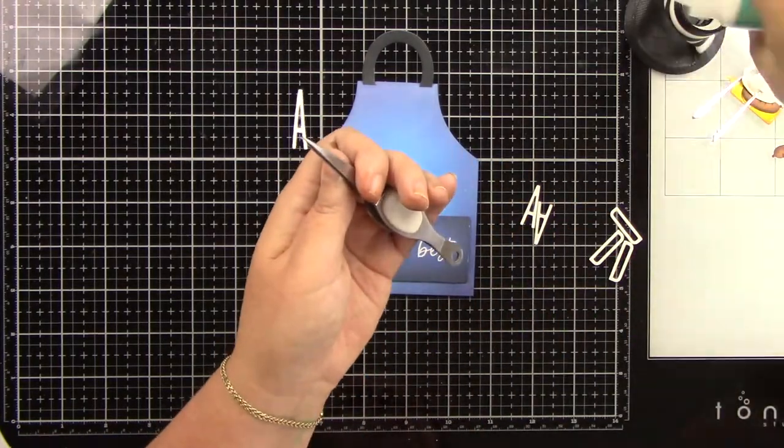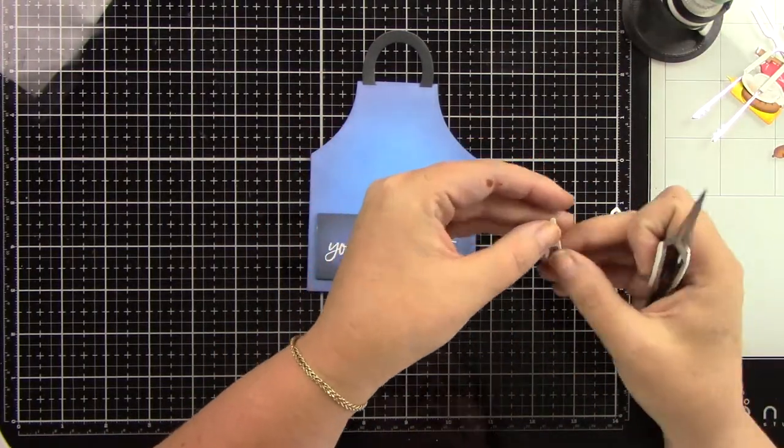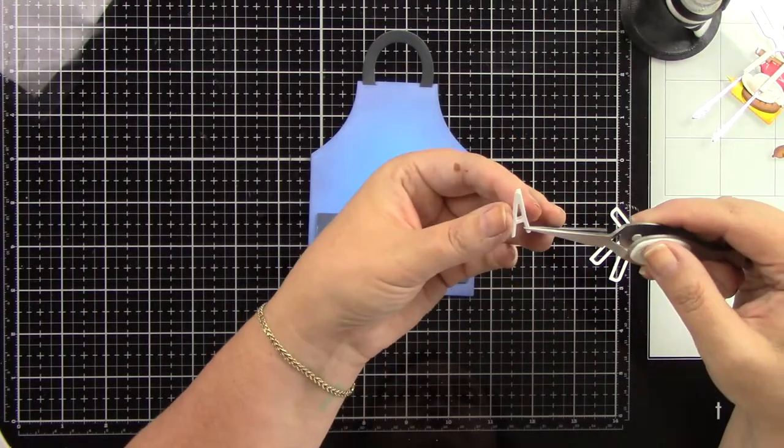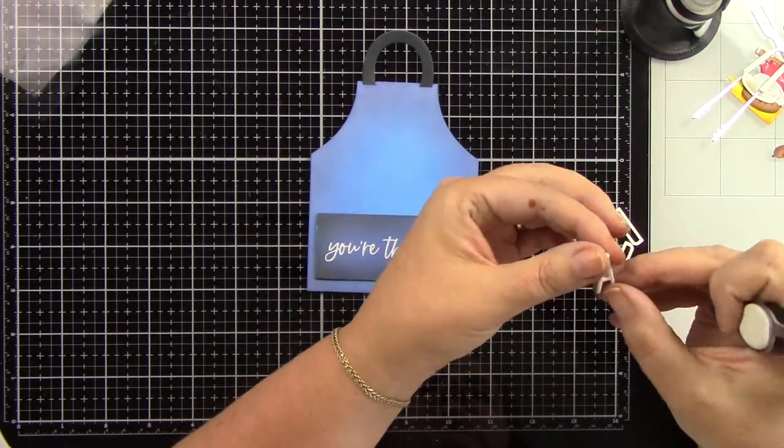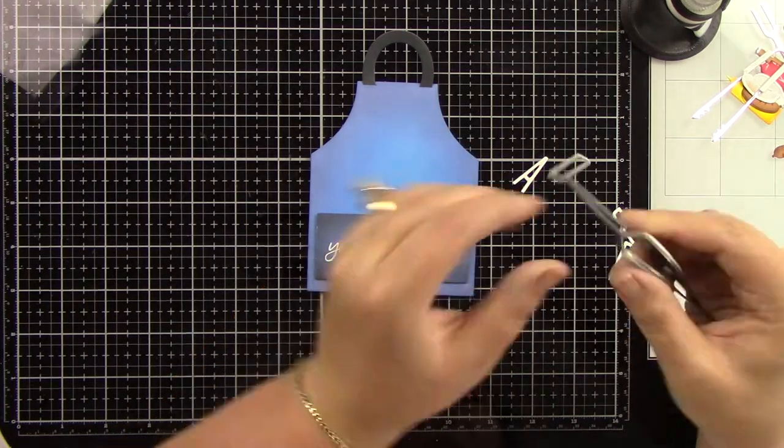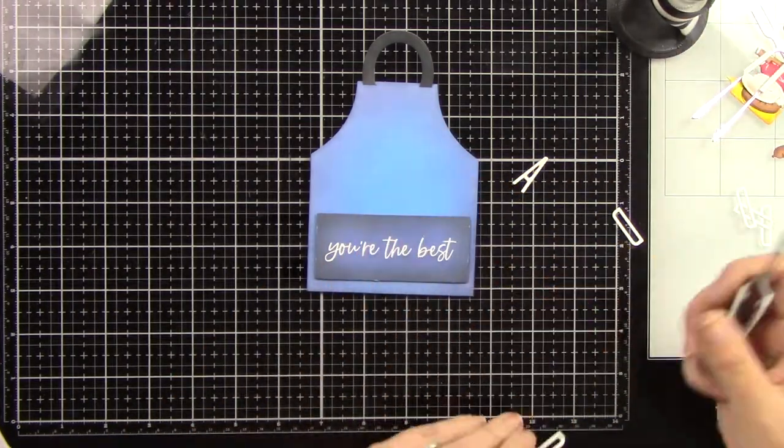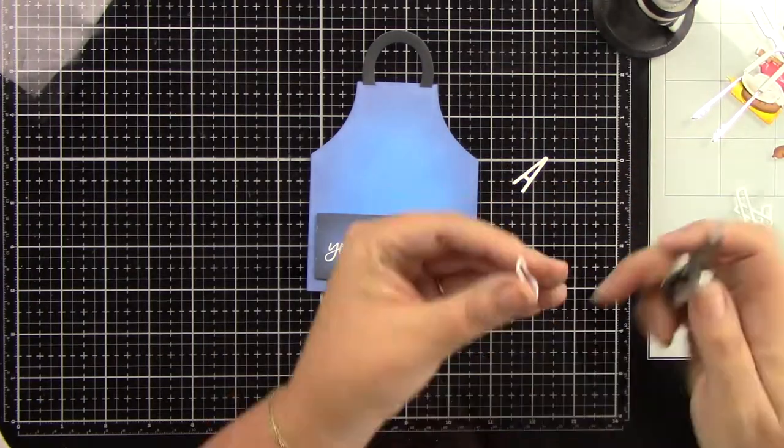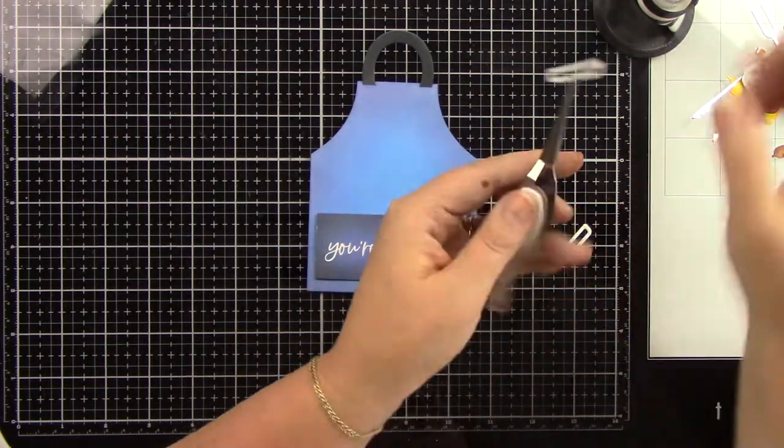I have used the Tailgate alphabet and die cut out the word dad. I have die cut for each letter three times from white cardstock, and I'm going to glue those pieces together. I want those to have some dimension.